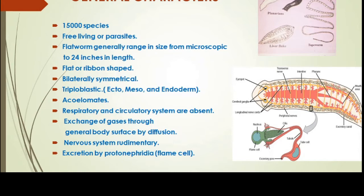For excretion, proper excretory organs are present throughout the entire body. These are protonephridia, commonly called flame cells. On the slide you can see the diagram of planaria and its cross-section, with flame cells shown in red. The cilia beat the surrounding tissue fluid, separating nitrogenous waste material. The movement of cilia resembles the flame of a candle, which is why they are called flame cells.